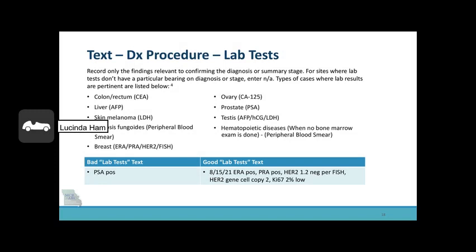What lab test results should you enter in the text box? Record only the findings relevant to confirming the diagnosis or summary stage. For sites where lab tests don't have a particular bearing on diagnosis or stage, enter NA. Types of cases where lab results are pertinent include: for colon and rectum, enter the CEA; for breast, enter ER, PR, HER2, or FISH; for prostate, enter the PSA. The bad text includes just simply PSA positive, while the good text includes the date and the results of each test.